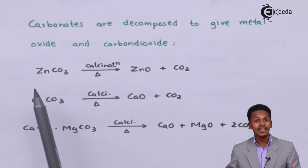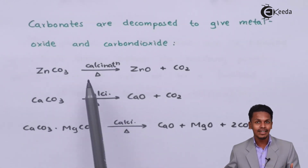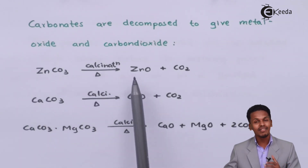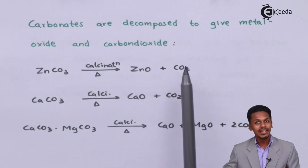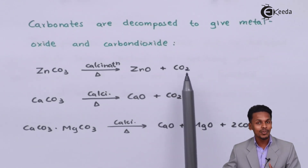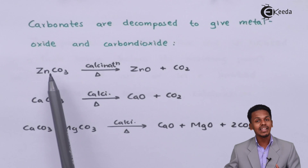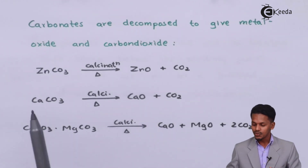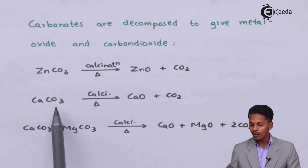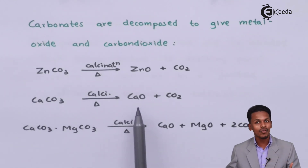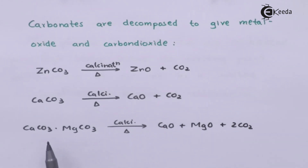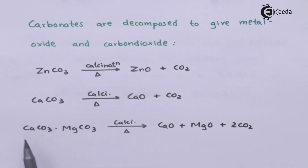For example, if zinc carbonate is heated through calcination, we obtain zinc oxide along with carbon dioxide. The CO₂ is removed and the carbonate is converted to the corresponding metal oxide. Similarly, if calcium carbonate is heated, the products obtained are CaO along with CO₂.